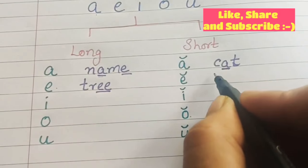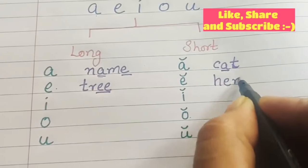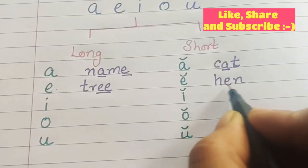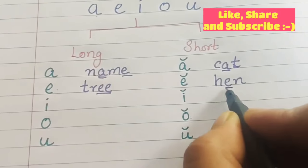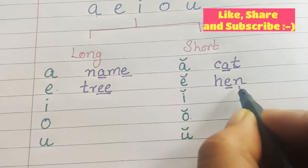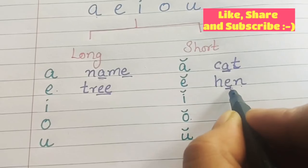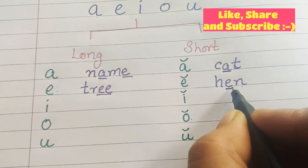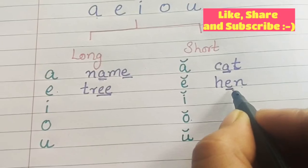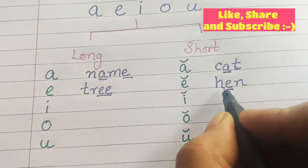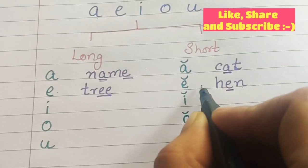Now short vowel E. Let's take the example of H-E-N, hen. How is it pronounced? H-E-N, hen. So this E is getting the pronunciation of E. E is getting the pronunciation of E. So this is the pronunciation for short E.